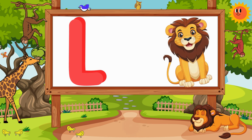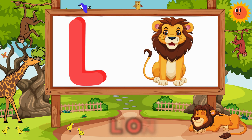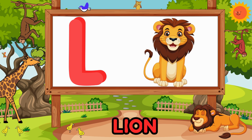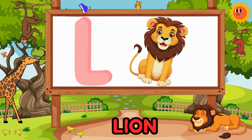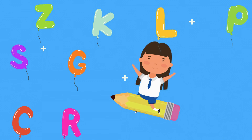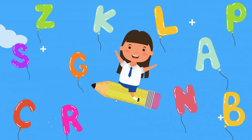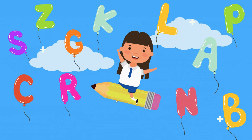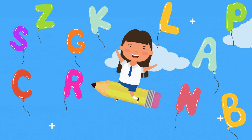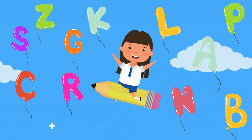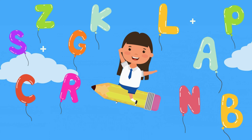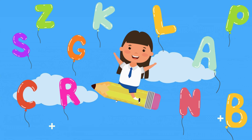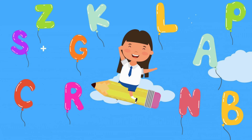L is for lion, the king of the savanna. Let's sing our phonics from A to Z. With animals galore, come sing with me.